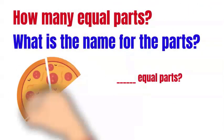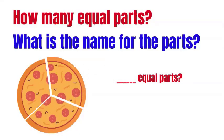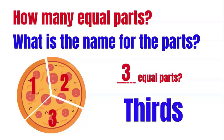How many equal parts and what is the name for each part? We've got one part, two parts, three parts. How many equal parts? That's right — three parts. And what do we call three parts? Thirds.